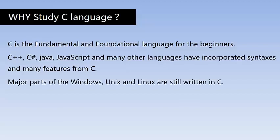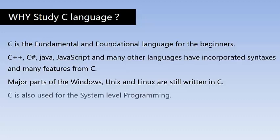Major parts of Windows, Unix and Linux are still written in C. That means C is also used for system-level programming. Most programs in operating systems are still written in C because C has many features, like functions that operate on bits. We can perform bit-level operations in C language, which is why it is very useful for system-level programming — we can manipulate the bits.